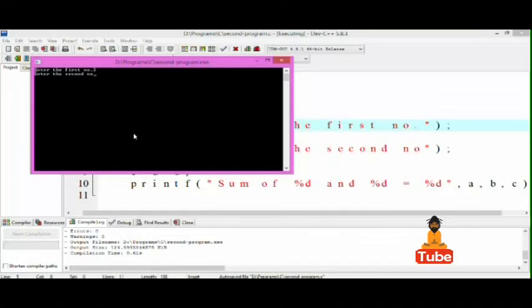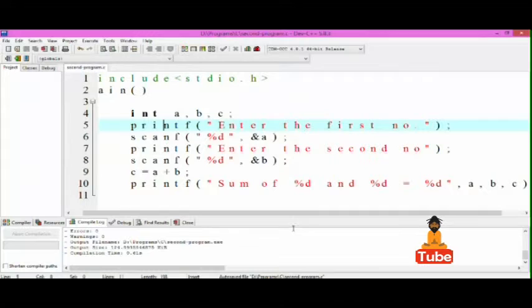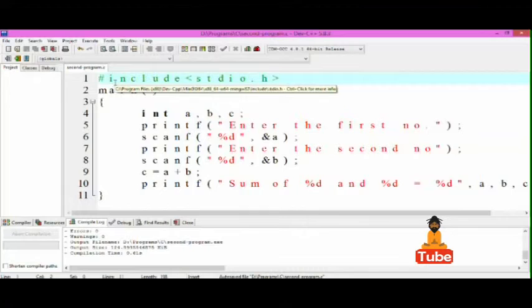Enter the first number: 2, second number: 3. Sum of 2 and 3 is equal to 5. So let's discuss this program.